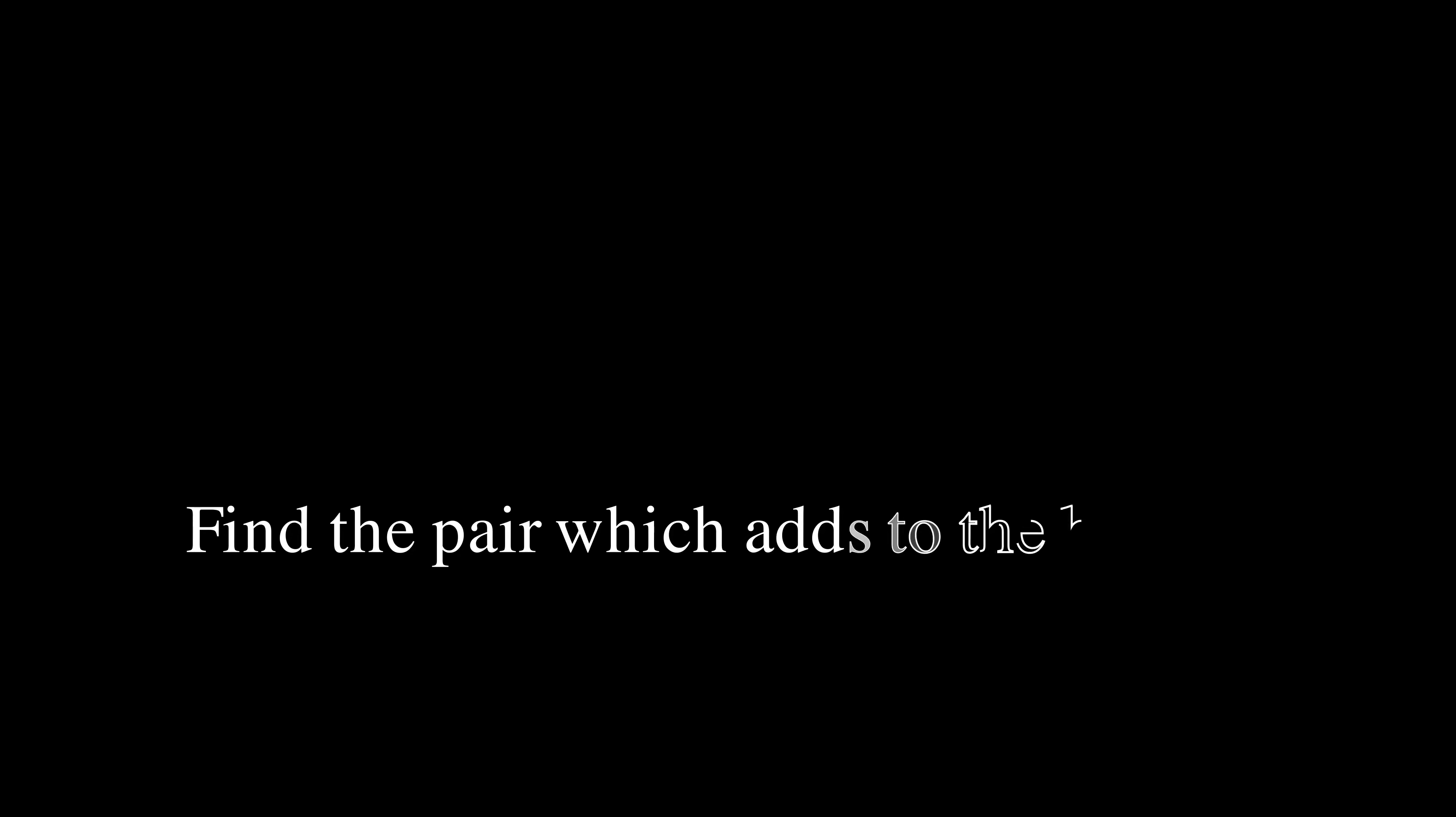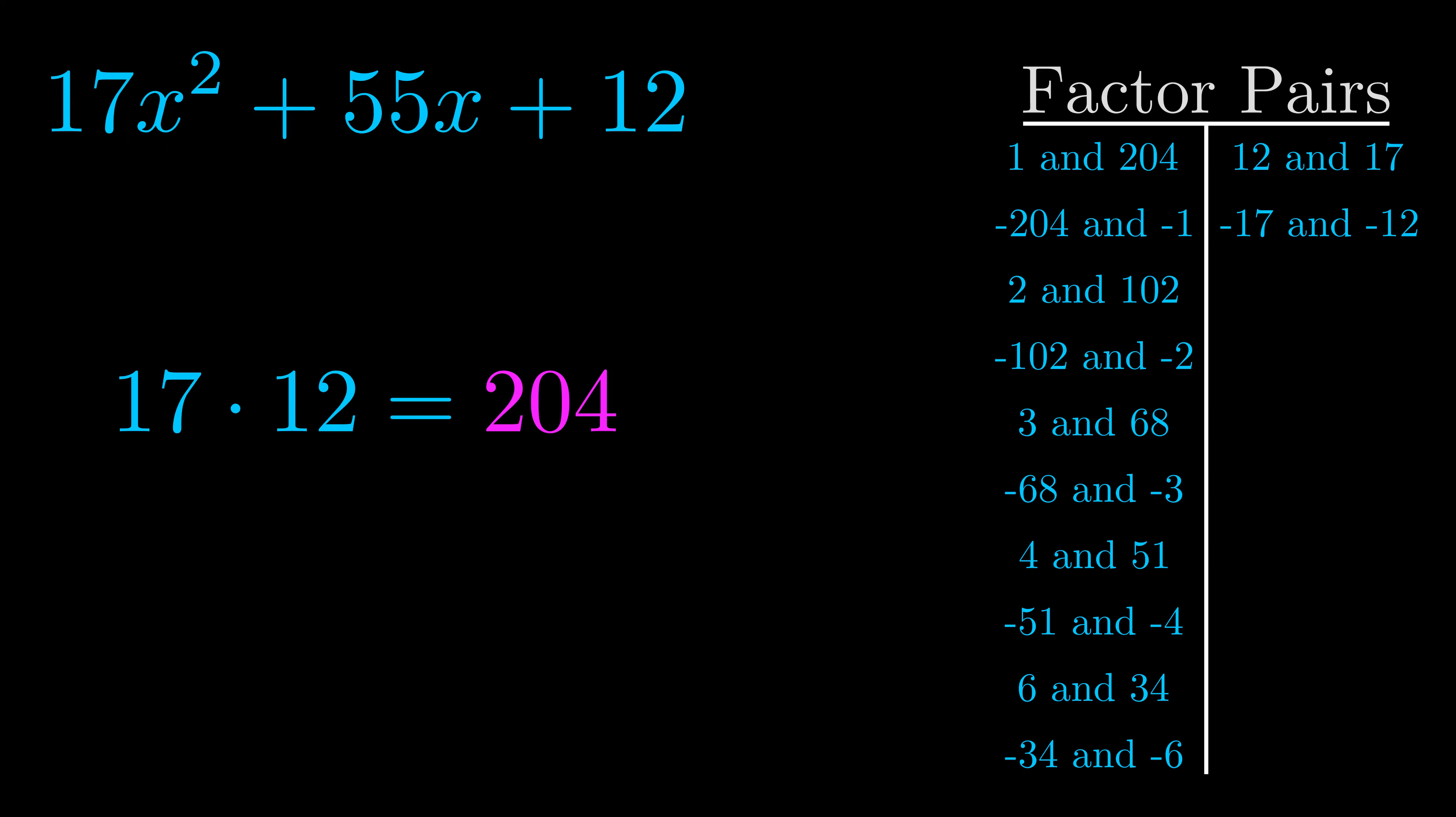The b value is the coefficient on the x term. That's the middle term, the one that we haven't done anything with yet. And really this is the only factor pair that we need.